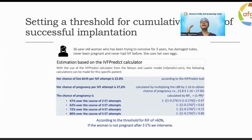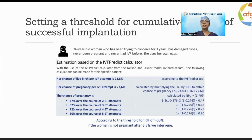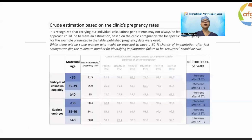If in three attempts she has not gotten pregnant, that is when you should start investigations. Many of these investigations are expensive, and doing them right from the first cycle will drain your finances without improving the overall outcome.